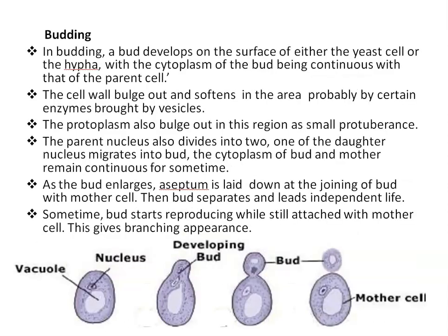In budding, a bud develops on the surface of either the yeast cell or the hypha. The cell wall bulges out and softens, then the protoplasm also bulges out in this region as a small protuberance. Then the parent nucleus divides into two; one of the daughter nuclei migrates into the bud and another remains in the parent cell. Then a septum is formed between the bud and the parent cell, and the bud separates and leads an independent life.